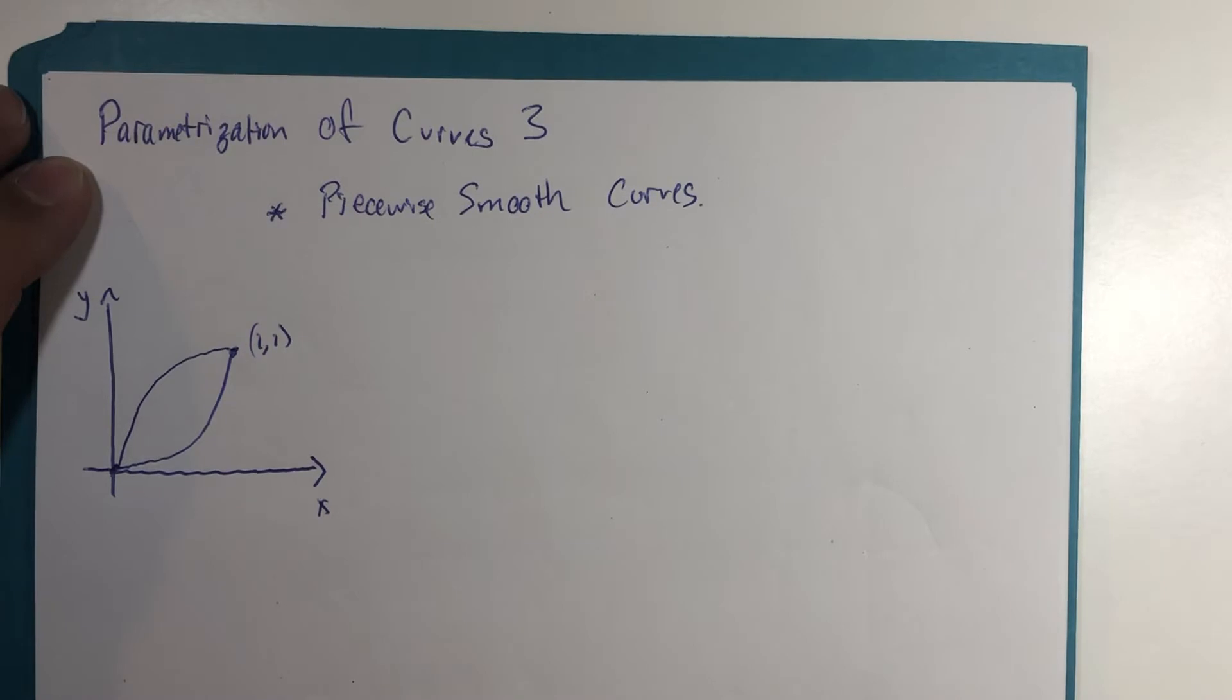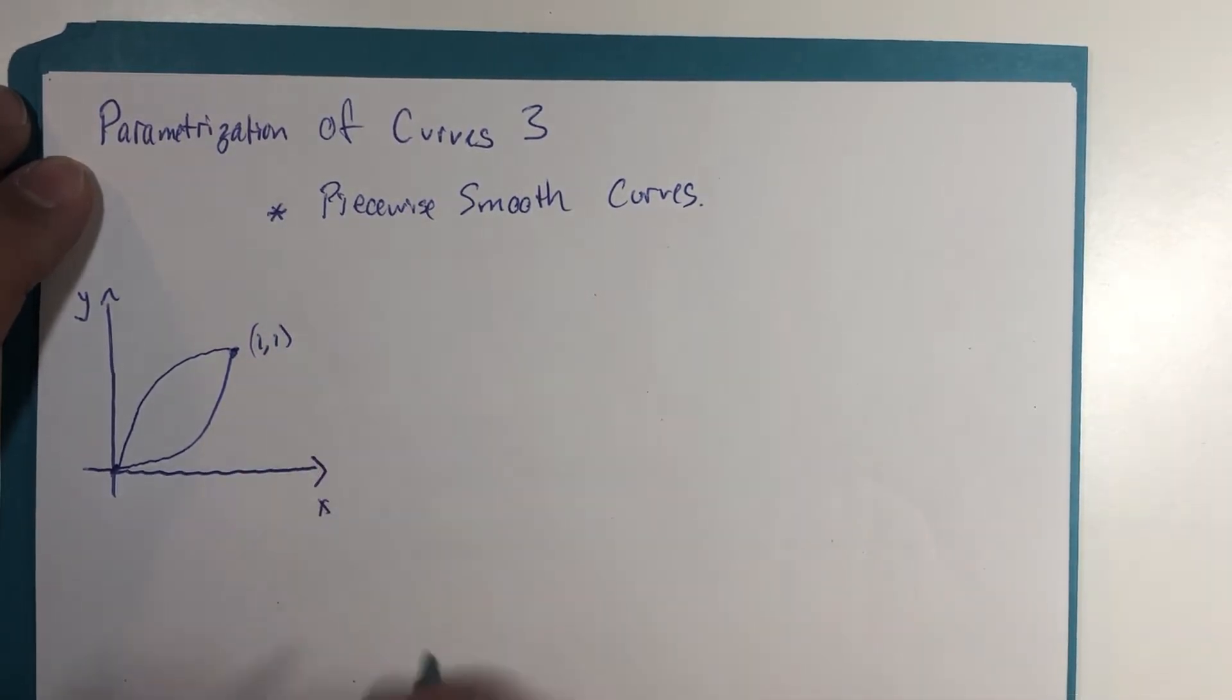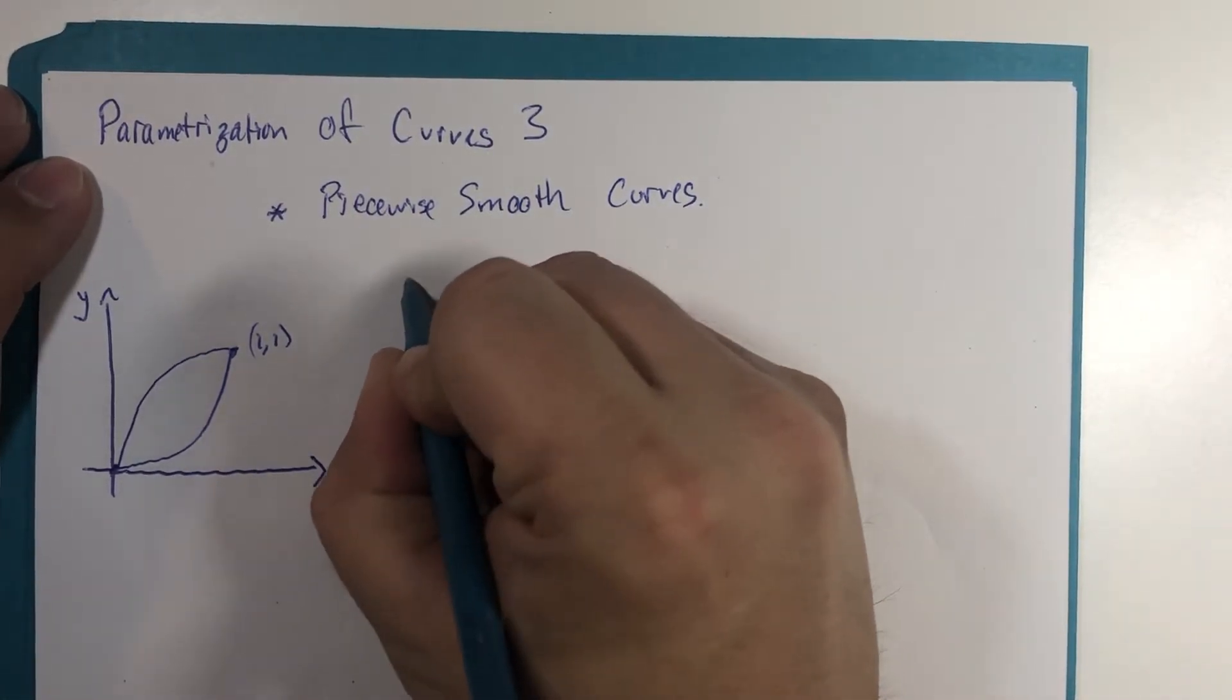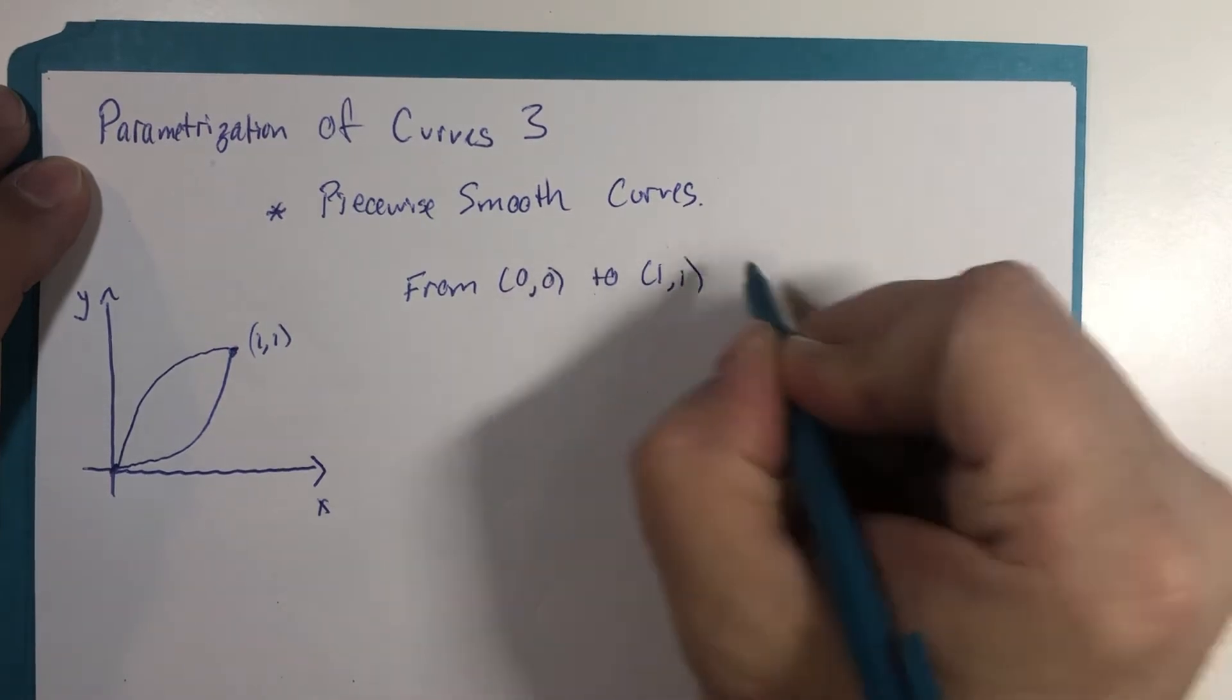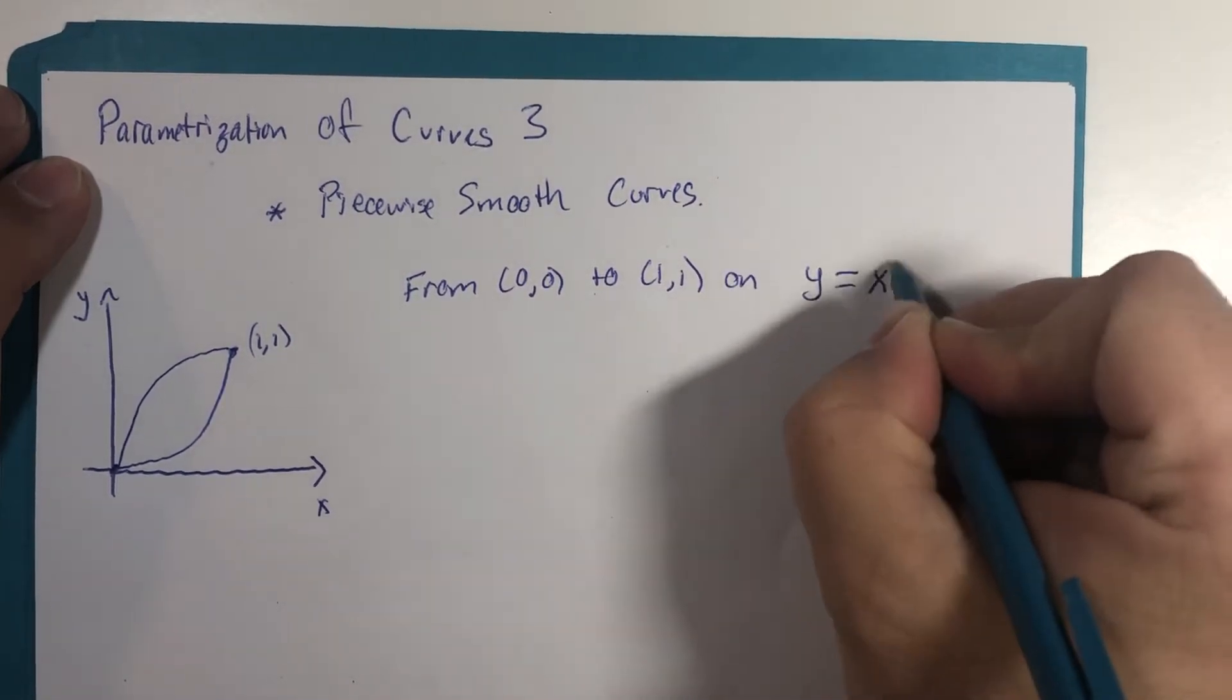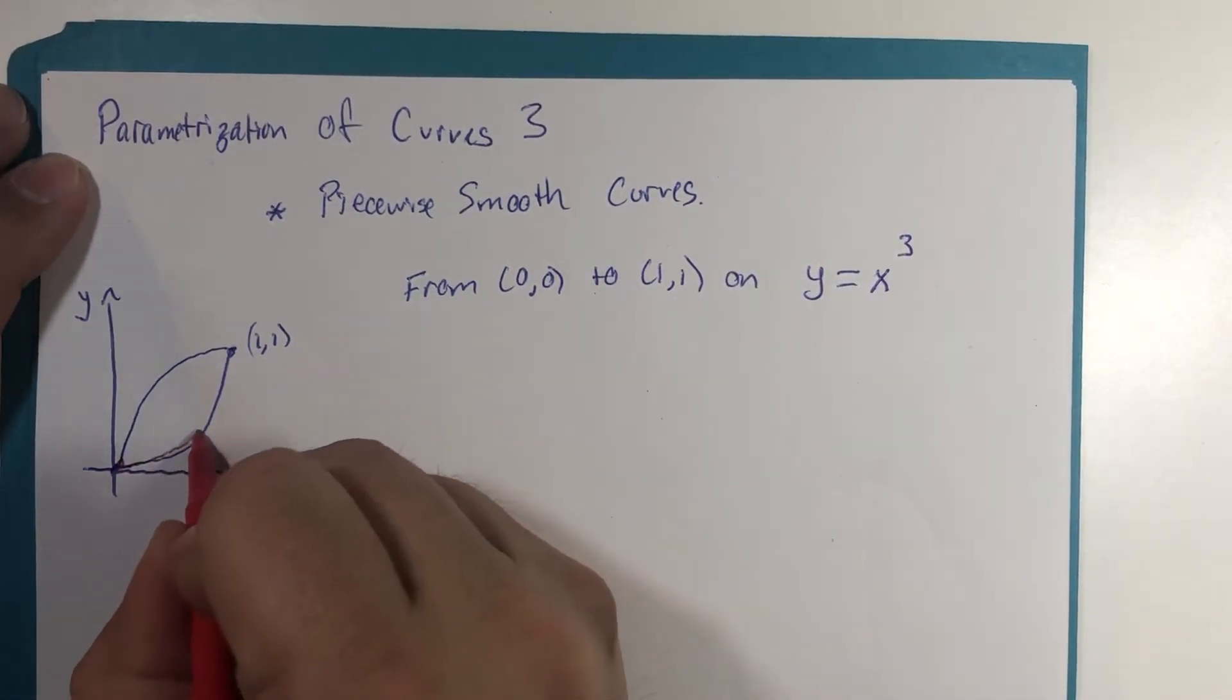In other words, we'll use more than one function to describe the graph and each function will be smooth, each piece will be smooth. So this particular graph is combined of the following: we're going from the origin to the point (1,1) on the graph of y=x³, so from here to here.